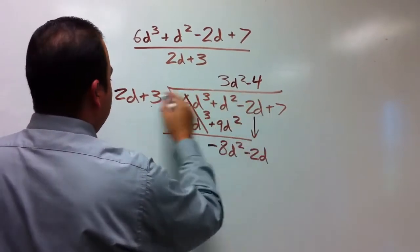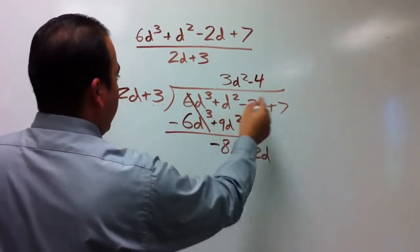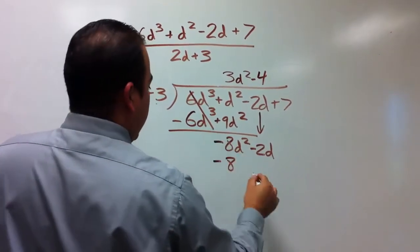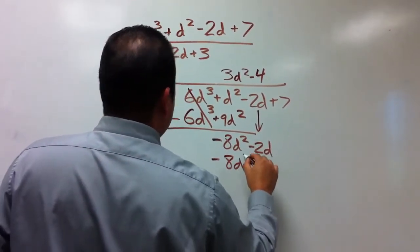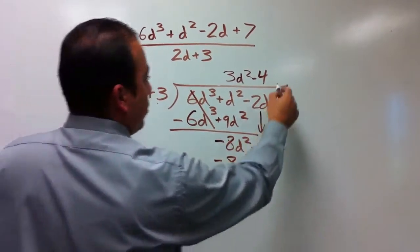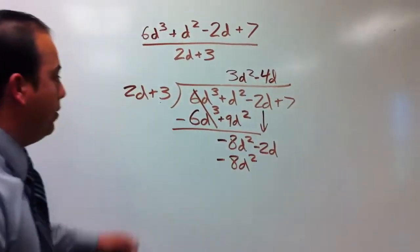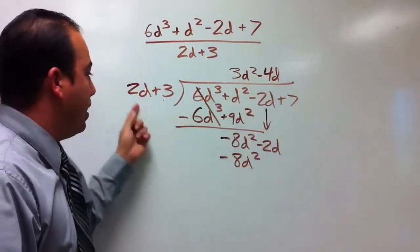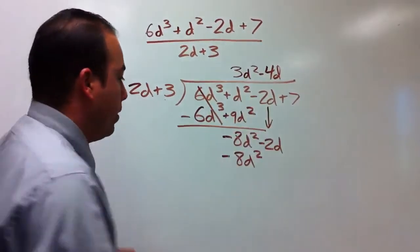2 times -4 is going to give me -8d², or I'm sorry, -4d over here. Sorry about that. 2 went into -8 negative 4 times, but I forgot about the d. I want to get d², so I need another d over here.